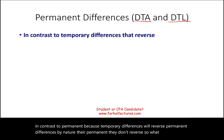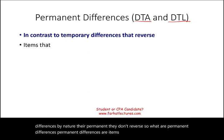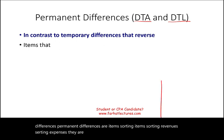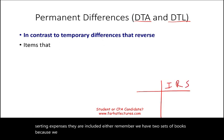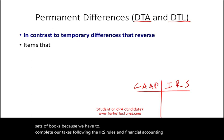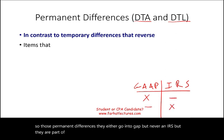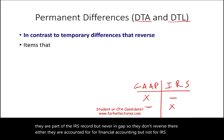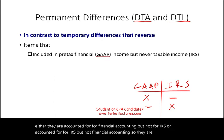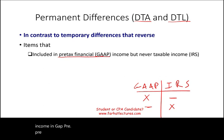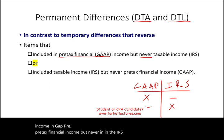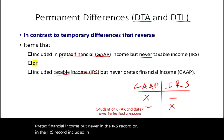So what are permanent differences? Permanent differences are certain revenues or expenses that are included in one set of books but not the other. We have two sets of books: taxes follow IRS rules and financial accounting follows GAAP. Permanent differences either appear in GAAP but never in the IRS record, or in the IRS record but never in GAAP.